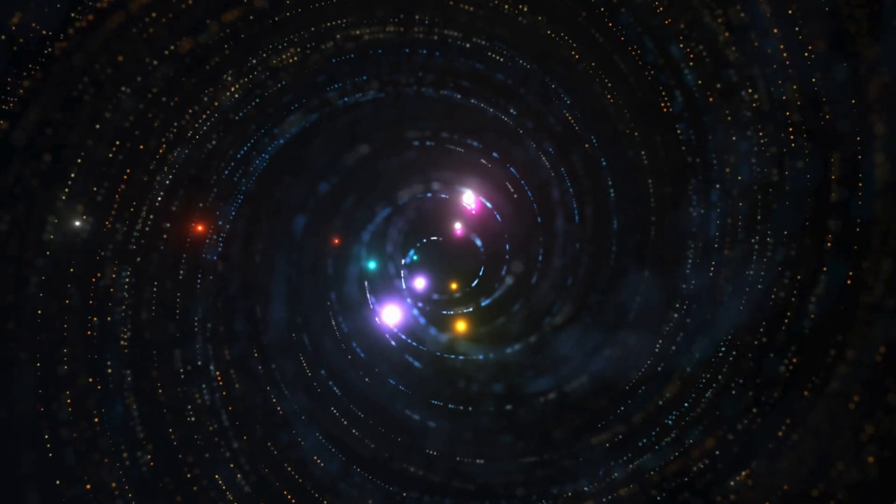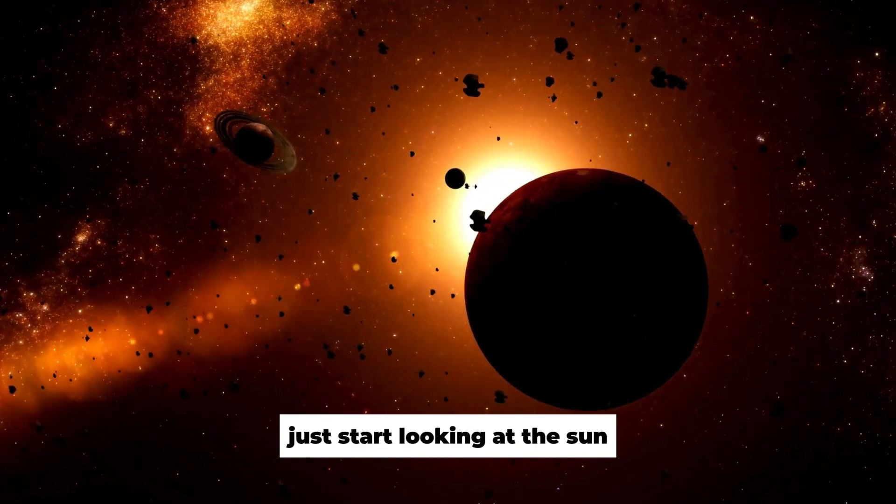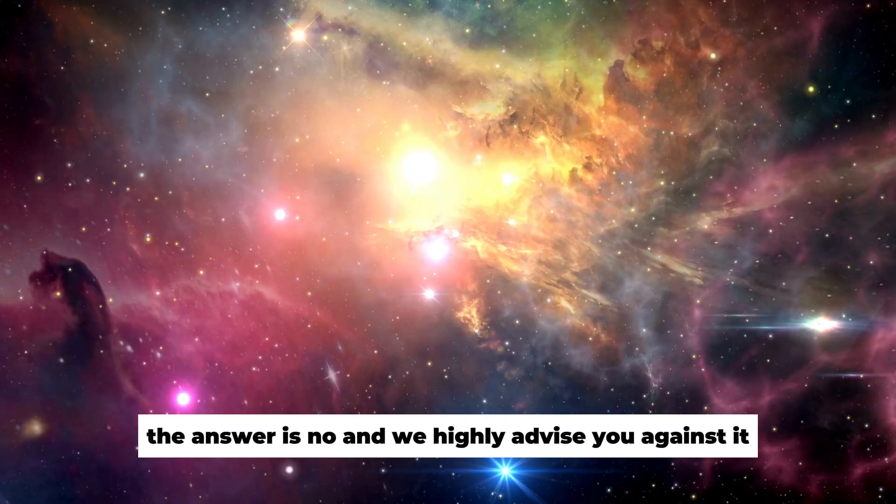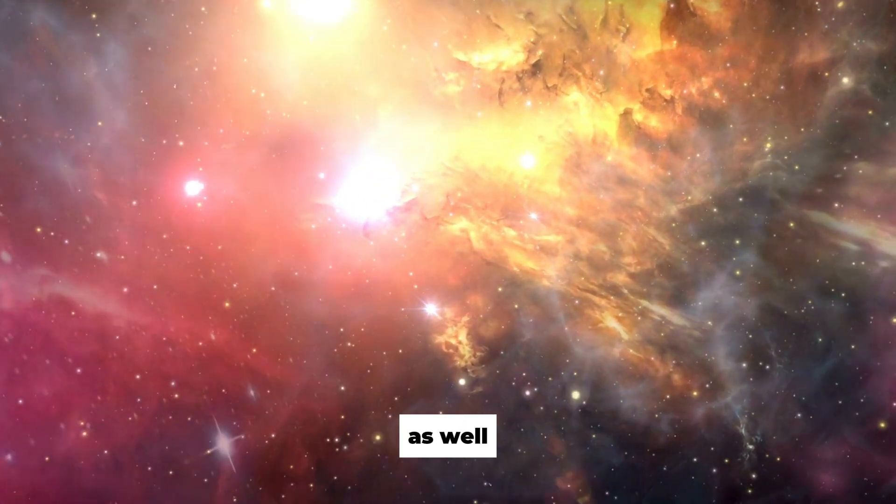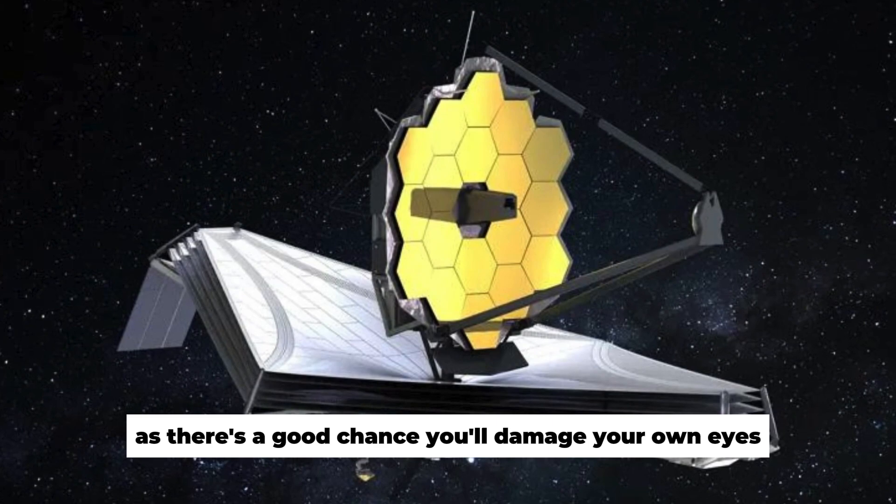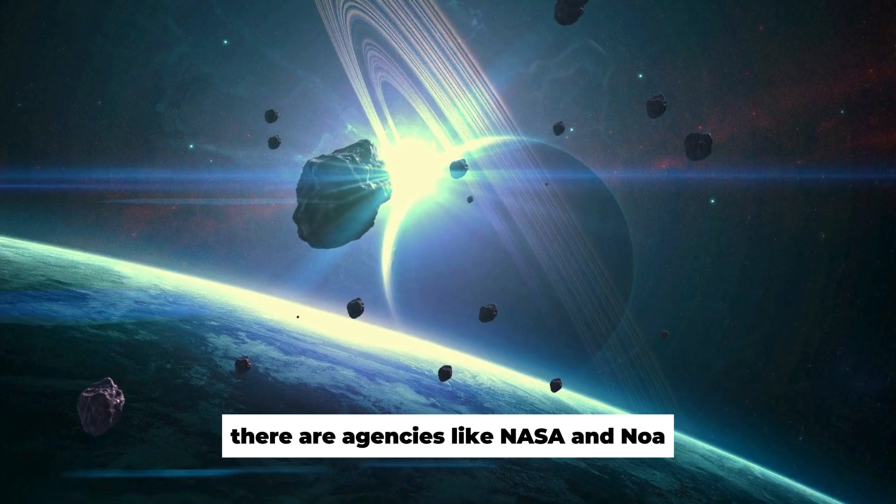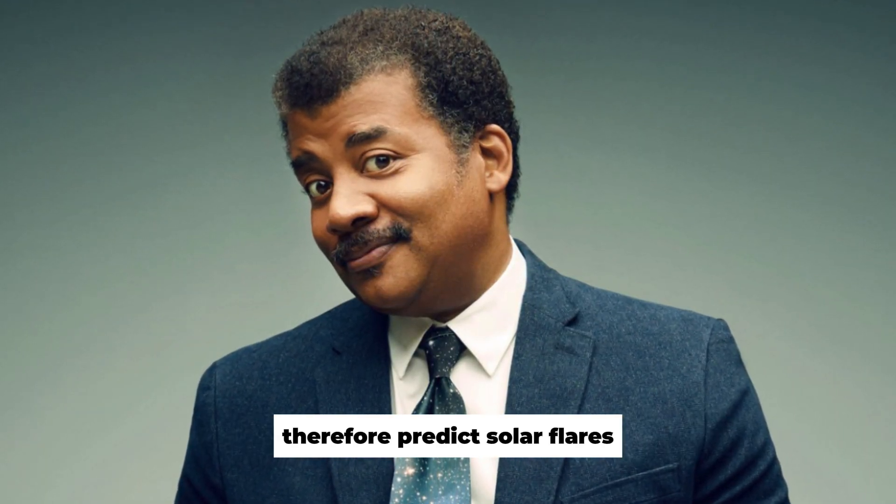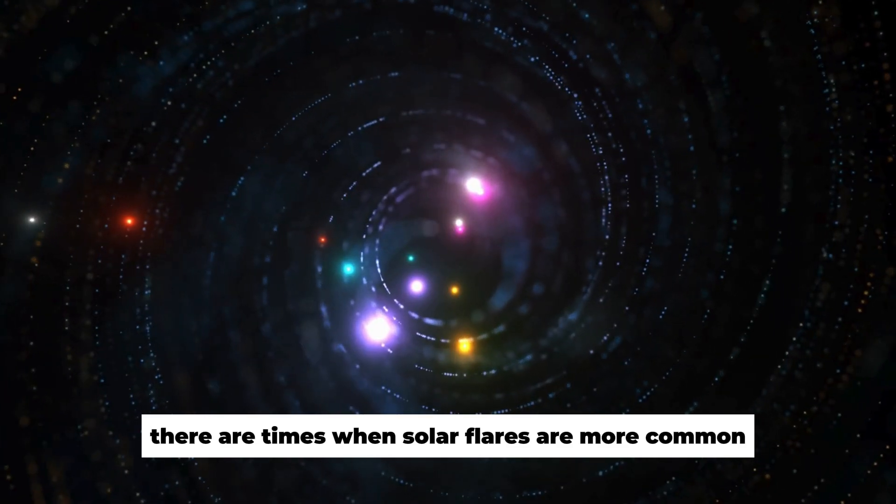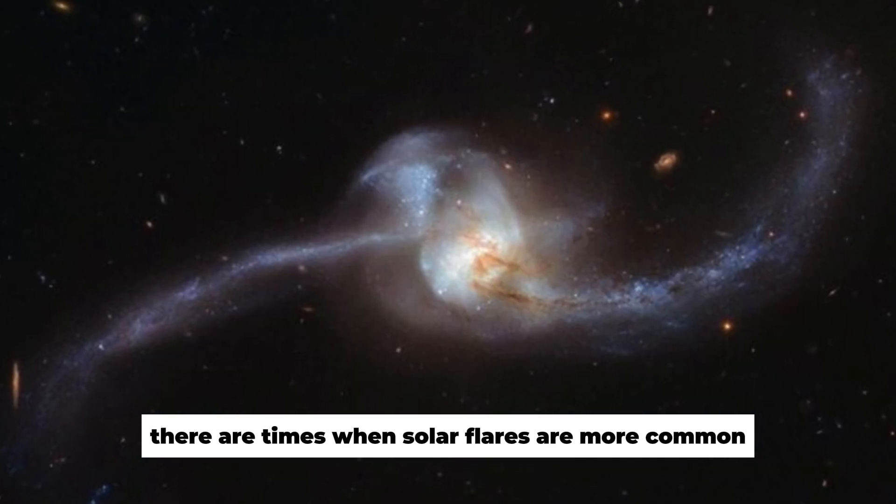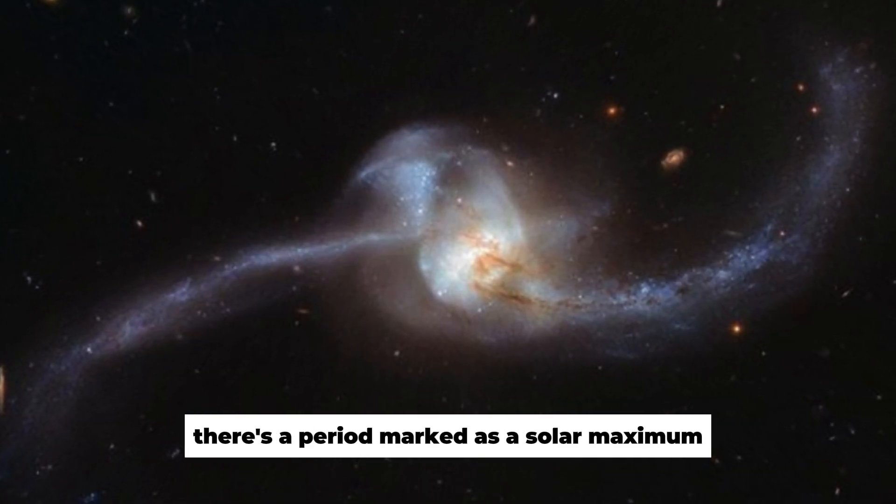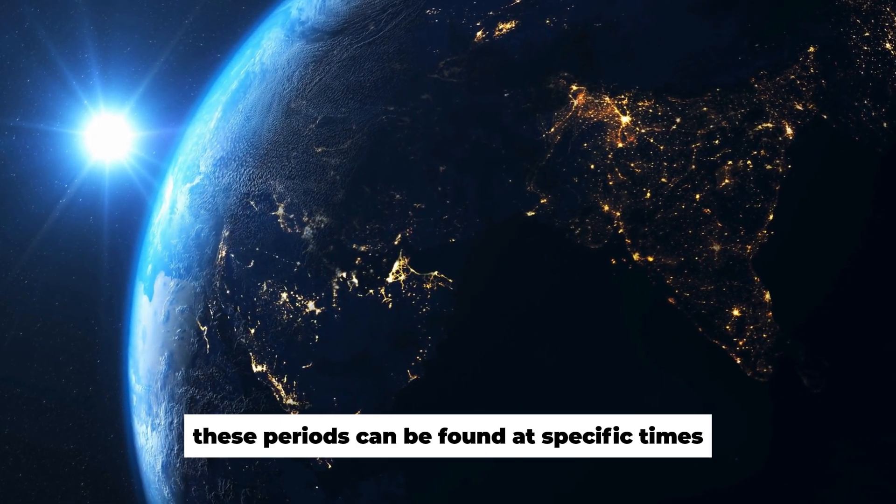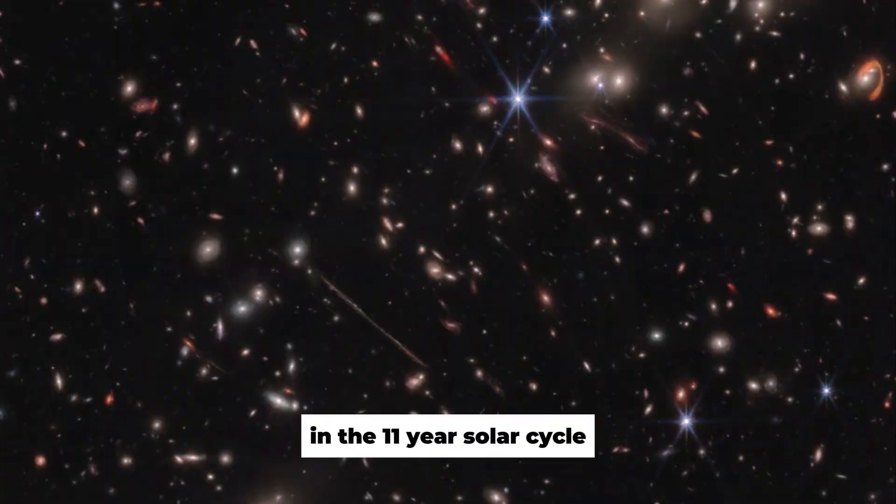So that begs the question, can anyone with a telescope at home just start looking at the sun and counting the sunspots on their own? The answer is no, and we highly advise you against it as well, as there's a good chance you'll damage your own eyes. There are agencies like NASA and NOAA that make sure they monitor solar activity and therefore predict solar flares. There are times when solar flares are more common. For example, if you look at the solar cycle, there's a period marked as a solar maximum and a solar minimum. These periods can be found at specific times in the 11-year solar cycle.